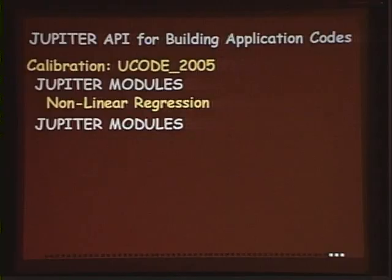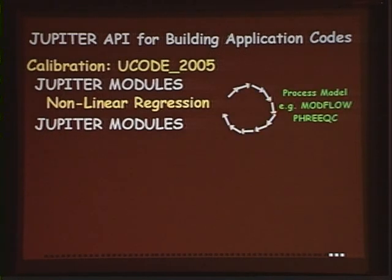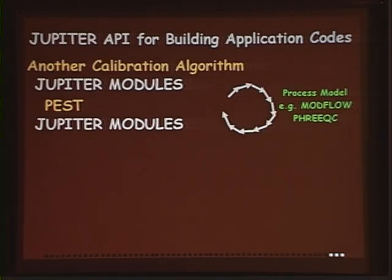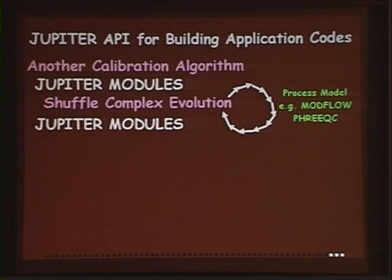For example, I took UCODE and put it into JUPITER — that's when it became UCODE 2005. Universal calibration codes like UCODE or PEST run the process model many times, and the JUPITER modules handle all the work of setting up files, running the model, and getting results out. All I need to focus on is the nonlinear regression algorithm that estimates the parameters. If you had set up files to run UCODE, you could take John Doherty's PEST version of JUPITER and, by adding a few parameters, run that calibration. Hopefully someone will add a shuffle complex as well.